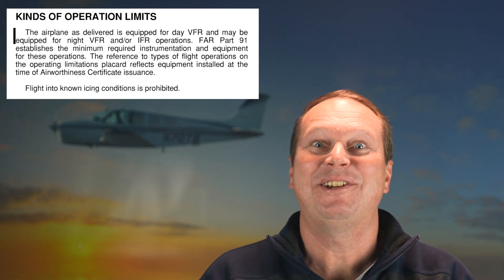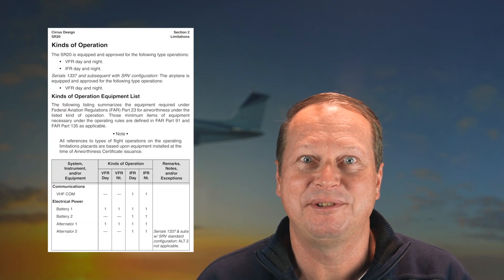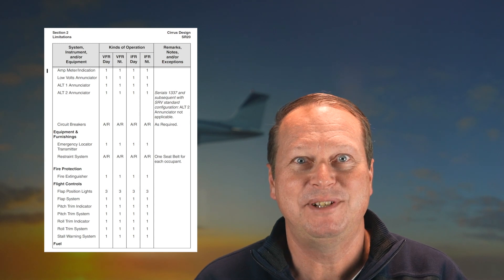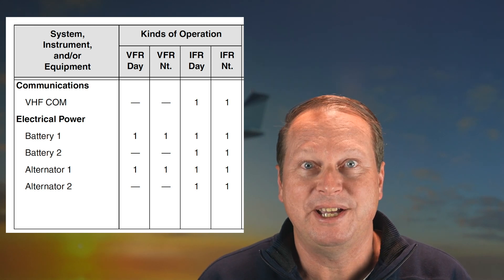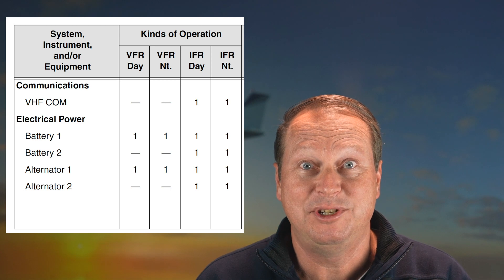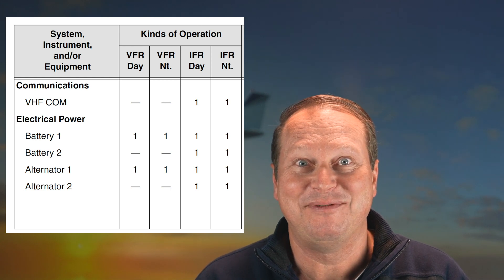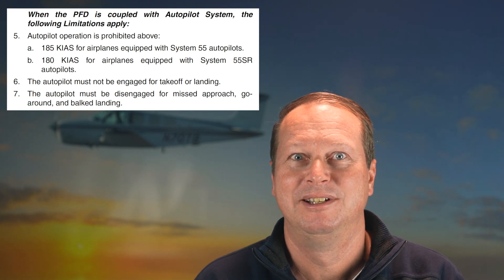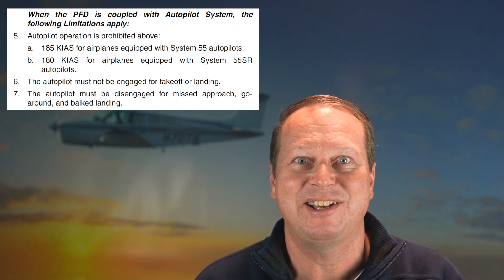The kinds of operations limits is very simple in the 172, basically referring to the applicable FARs. Let's look at the equivalent section for a Cirrus SR20. This table is part of the decision-making process when something is broken, to see if it's still okay to fly. For example, in the SR20, battery number one is required for any flight, but if battery number two is broken, you can legally fly VFR but not IFR. You can also see limitations related to the autopilot — for example, different maximum airspeeds depending on whether your SR20 has an Aztec 55 or 55SR autopilot.